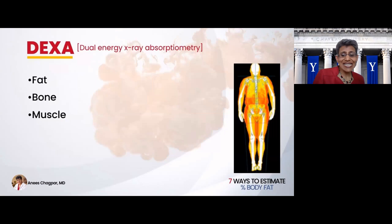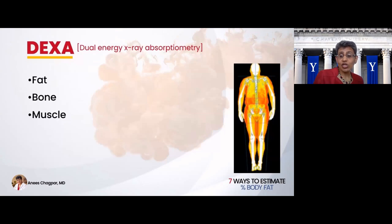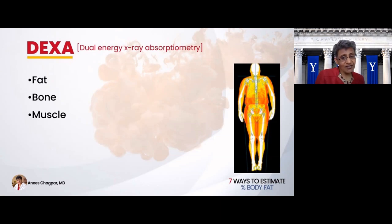Similarly, DEXA is another high-tech technology that uses dual energy X-ray absorption to look at what proportion of your body is fat, what proportion is bone, and what proportion is muscle. Again, highly accurate, but kind of expensive.